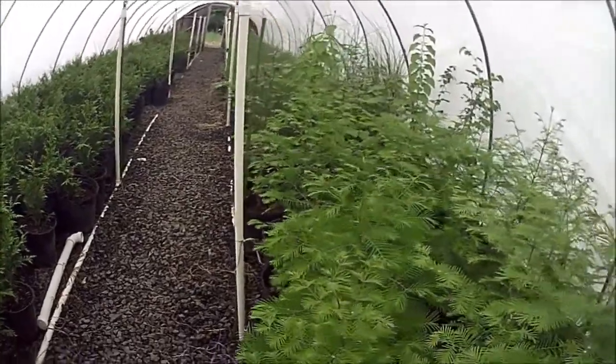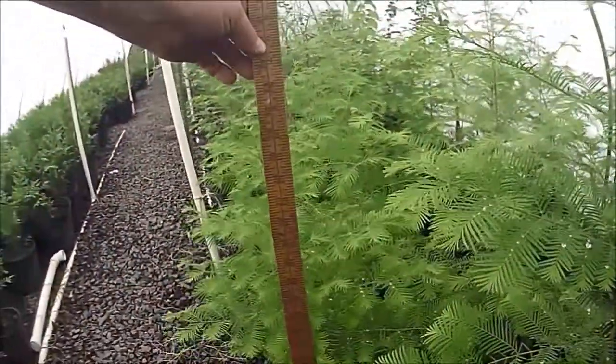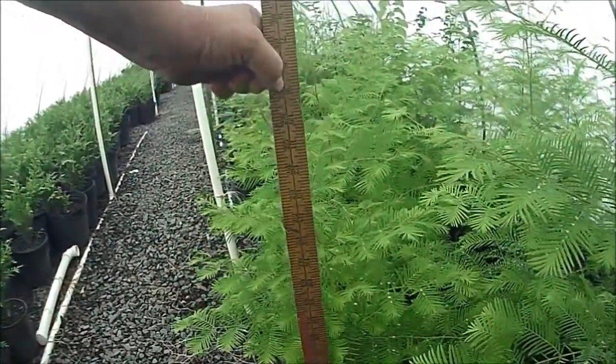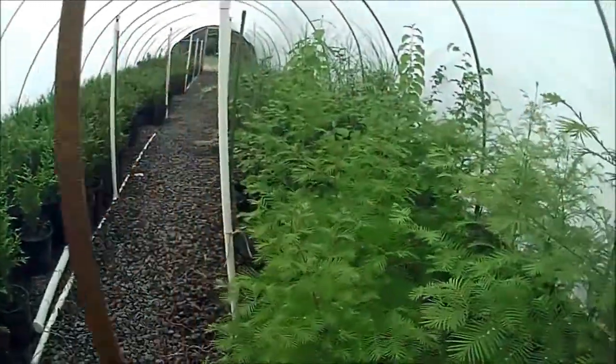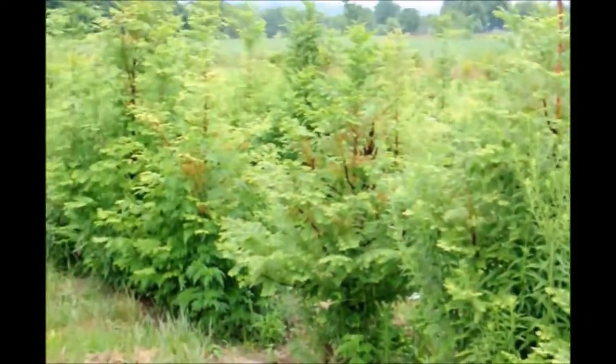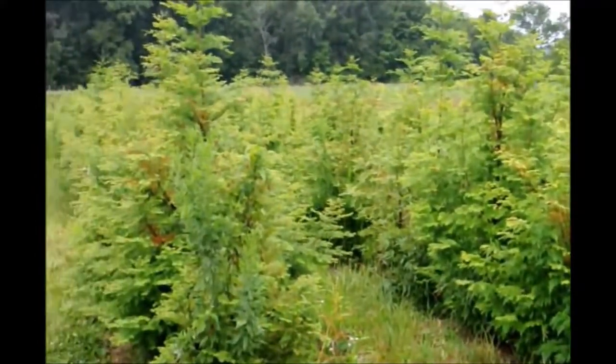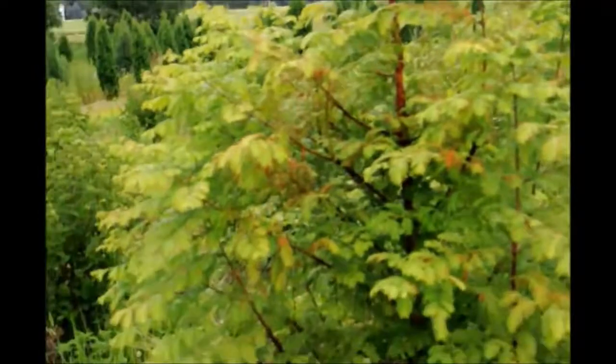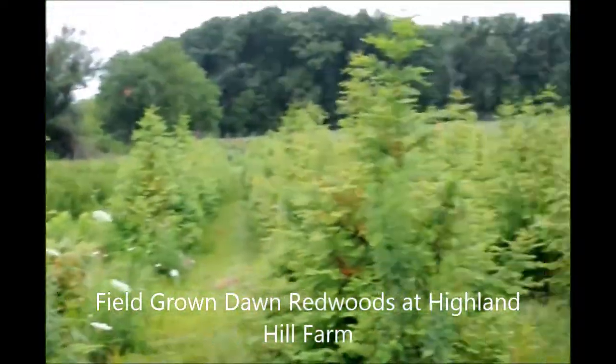At Highland Hill Farm, we grow both the dawn redwood and bald cypress. We sell them from small seedlings up to large trees. These are our seedling dawn redwoods in pots growing in a greenhouse. They're about 24 inches tall. We also have in the field these five to six foot dawn redwoods that were planted only two years ago. They have very fast growth and are easy to grow.